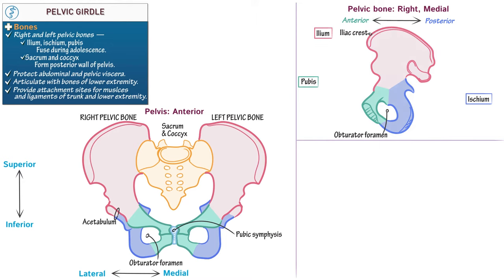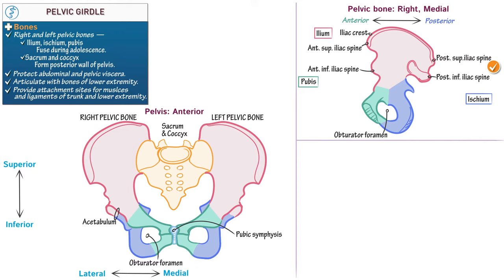Place your hands where your waist meets your hips to feel your iliac crest. Where the iliac crest terminates, label the anterior and posterior superior iliac spines. To feel one of these rounded projections, place your hands on the front of your hips to palpate your anterior superior iliac spine. Then show that the anterior and posterior inferior iliac spines are inferior to the superior spines. The iliac spines anchor muscles of the hip and thigh. Label the ala, which is the broad, flat portion of the ilium below the iliac crest. The concave portion of the ala is the iliac fossa, which gives a bowl shape to this region of the pelvis.